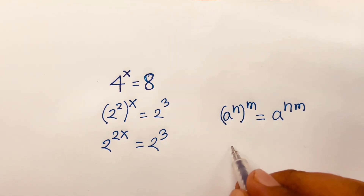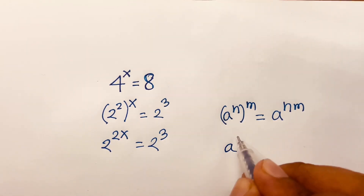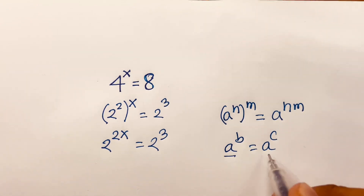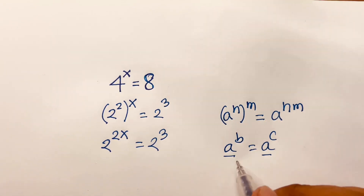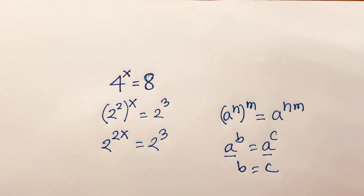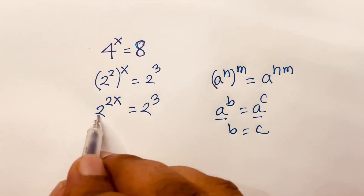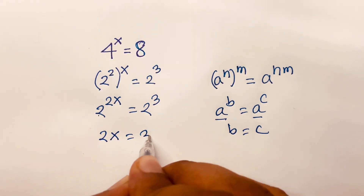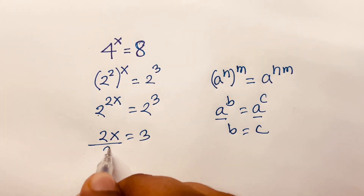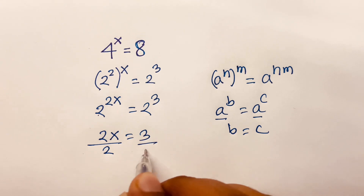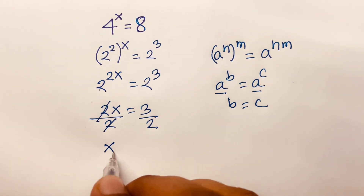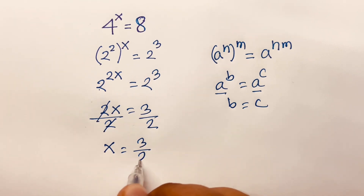We know that if a to the power b is equal to a to the power c, when the base is the same, then b is equal to c. So since the base is the same here, the powers are equal. So 2x is equal to 3. If I divide both sides by 2, the 2 cancels and we find x is equal to 3 over 2.